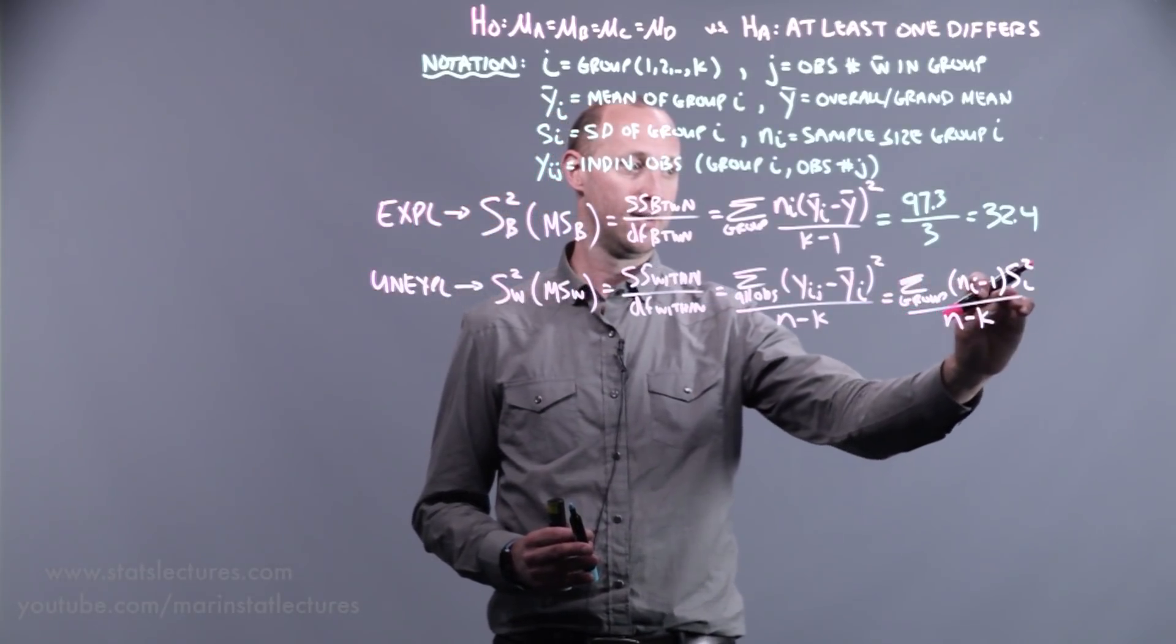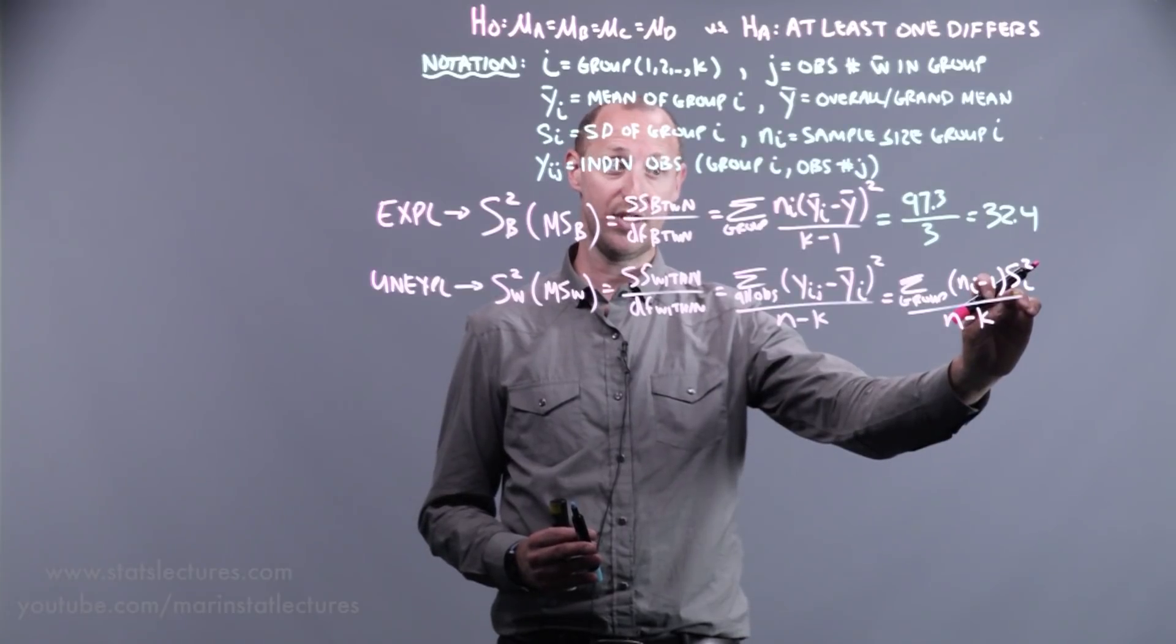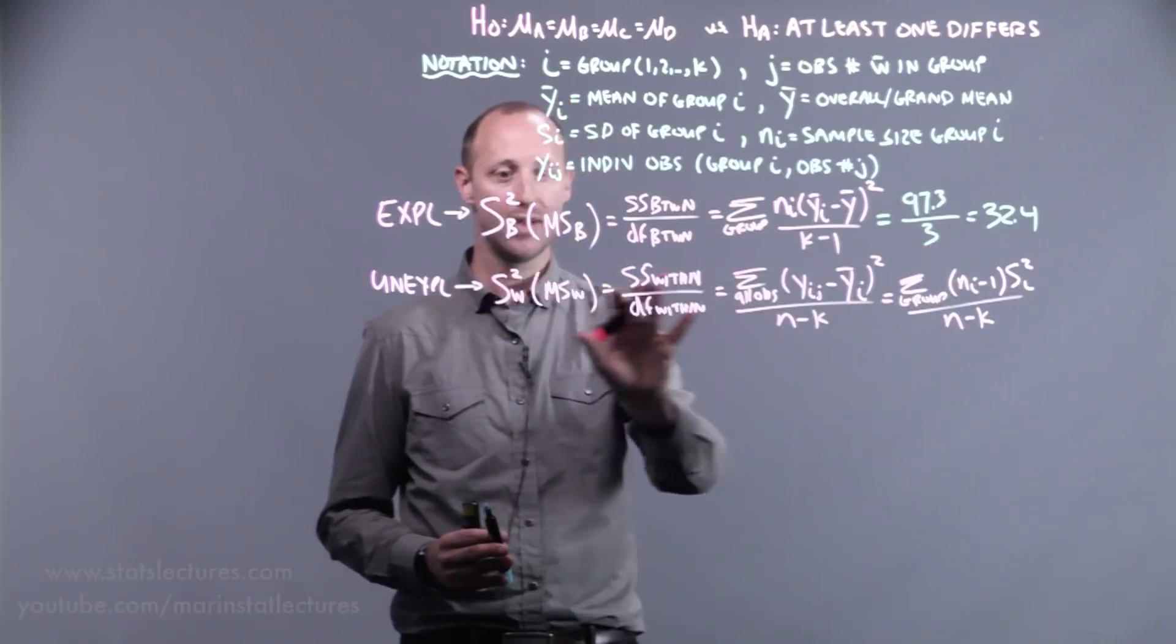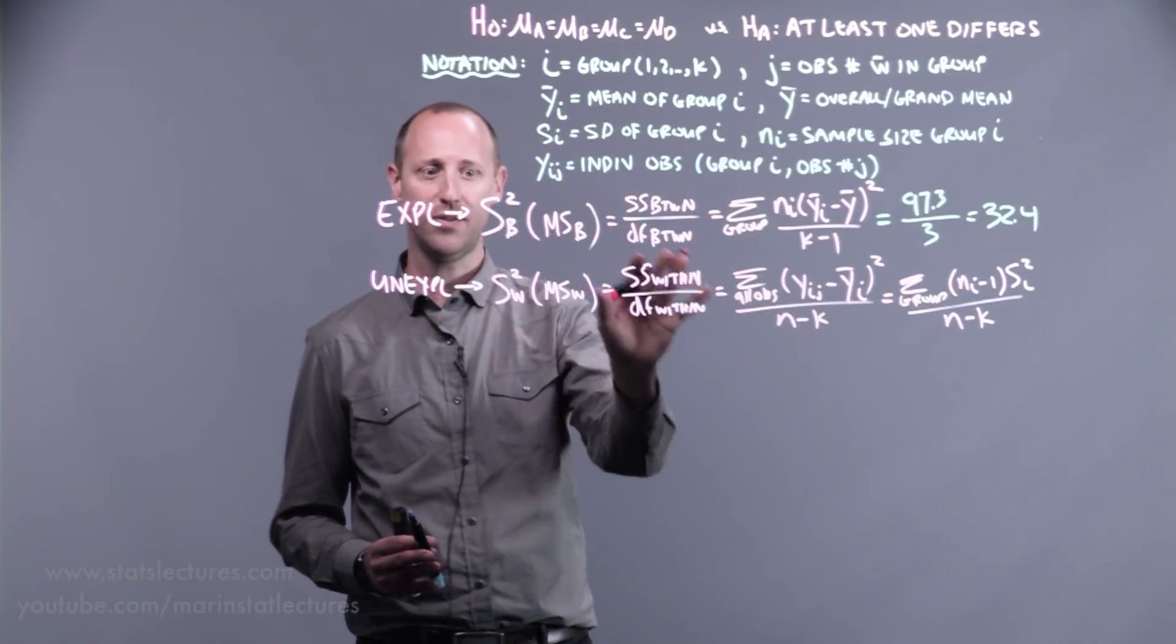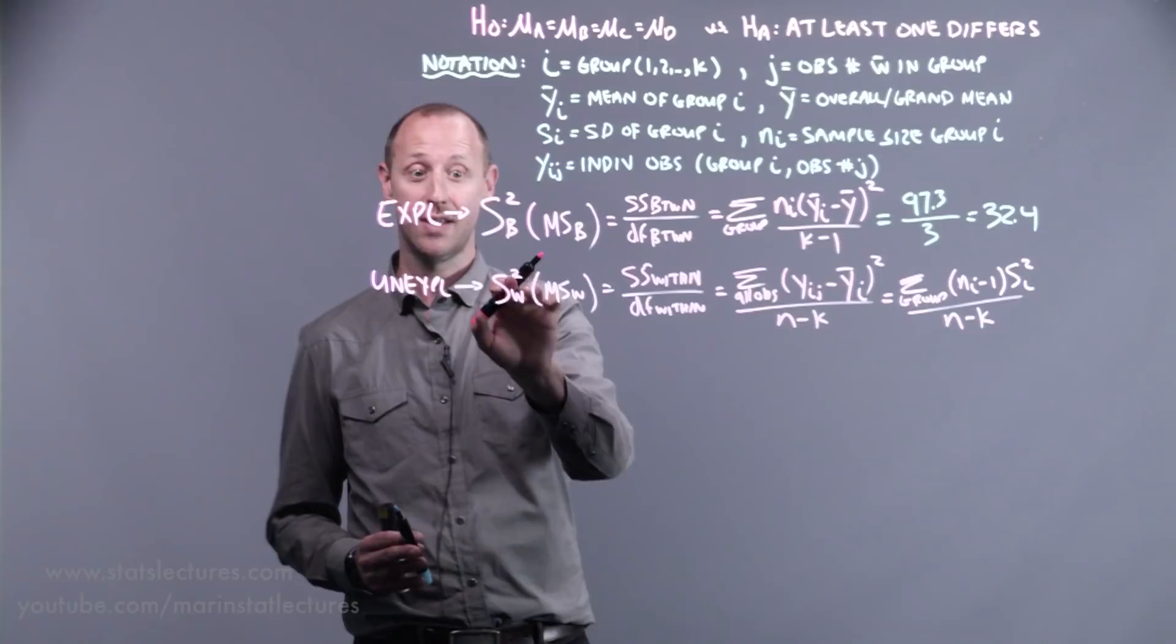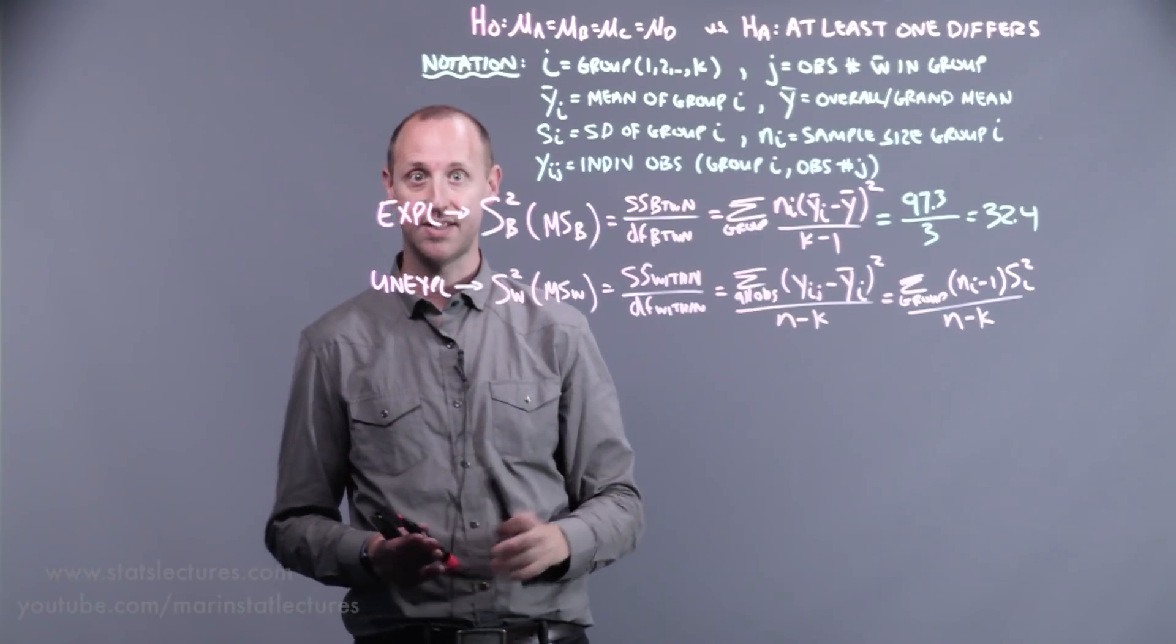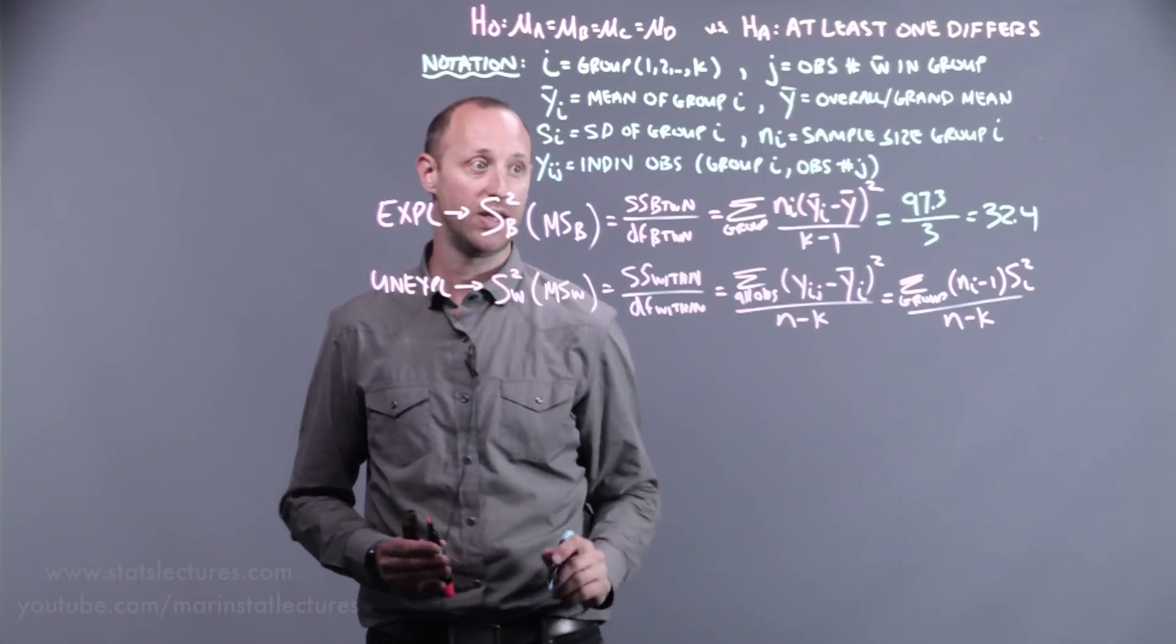We're taking the sample variance of each group, weighted by their degrees of freedom. So you can take a moment yourself to work your way through, and convince yourself that this within-group variance is the exact same as the pooled variance in the two-sample t-tests, assuming equal variance.